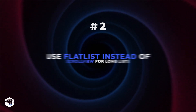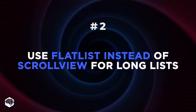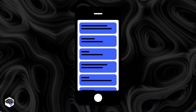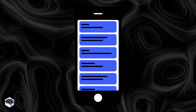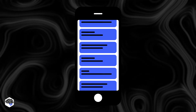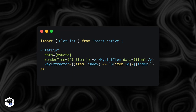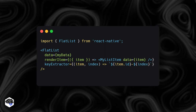The second tip is to use FlatList instead of ScrollView for long lists. FlatList is a high-performance list component that renders items incrementally as you scroll, which means it's more efficient than ScrollView for large datasets.